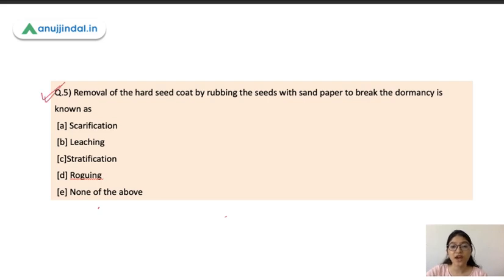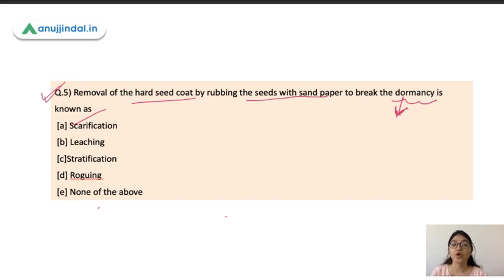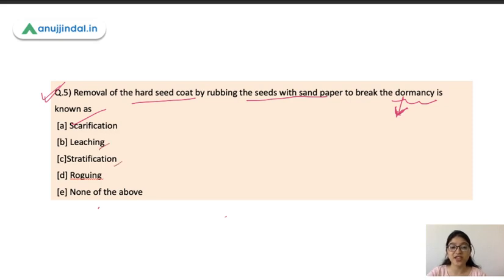Question 5: Removal of the hard seed coat by rubbing seeds with sandpaper to break dormancy is known as what? Dormancy is a temporary suspension of seed germination — seeds are viable but do not germinate due to unfavorable conditions or an immature embryo. Different methods to break dormancy include scarification, leaching, and stratification. The correct answer is scarification — rubbing the hard seed coat with sandpaper.